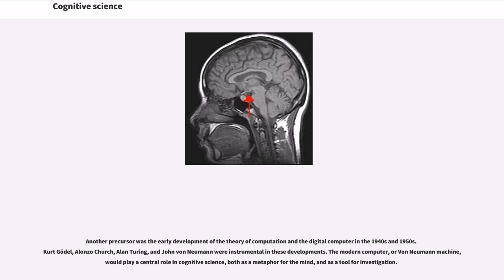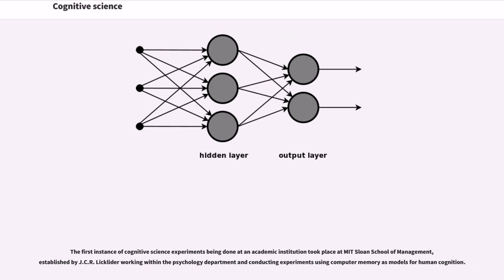Another precursor was the early development of the theory of computation and the digital computer in the 1940s and 1950s. Kurt Gödel, Alonzo Church, Alan Turing, and John von Neumann were instrumental in these developments. The modern computer, or von Neumann machine, would play a central role in cognitive science, both as a metaphor for the mind, and as a tool for investigation. The first instance of cognitive science experiments being done at an academic institution took place at MIT Sloan School of Management, established by J. C. R. Licklider working within the psychology department and conducting experiments using computer memory as models for human cognition.